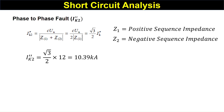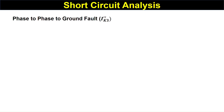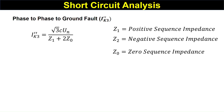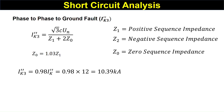When we perform the ETAP analysis, you can verify these values — the line-to-ground and line-to-line fault currents — coming out to exactly around these values. Now the phase-to-phase-to-ground fault, or double line-to-ground fault, I_k3 double dash equals root three times c_un divided by Z1 plus twice Z0. Putting the value Z0 equals 1.03 times Z1, I_k3 double dash becomes 0.98 times I_k double dash, which equals 0.98 times 12, giving approximately 10.39 kiloamperes.